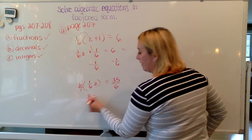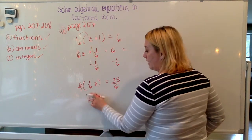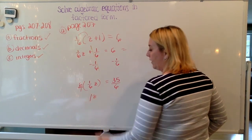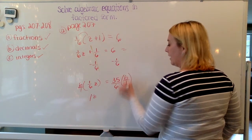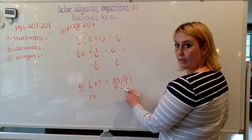But if I multiply by 6 on that side, I need to multiply by 6 on this side. These cancel each other out, right?